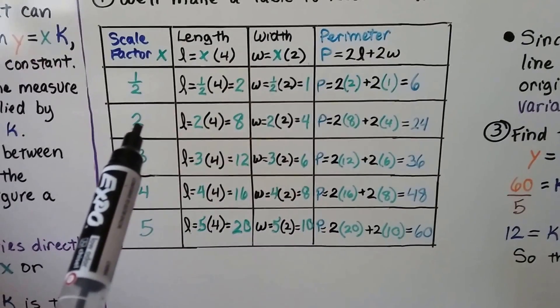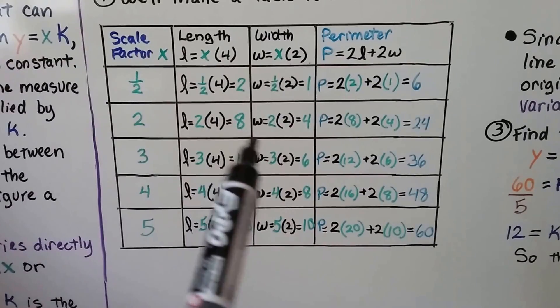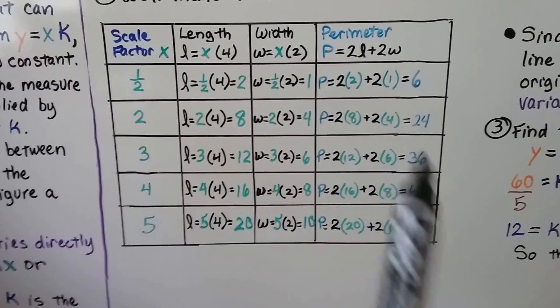If we have x is equal to 2, then our length is going to be an 8, our width will be a 4, and our perimeter will be a 24.